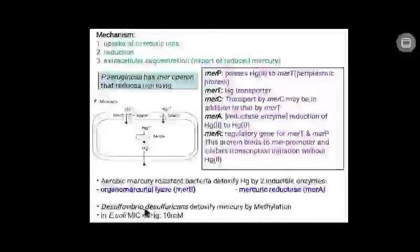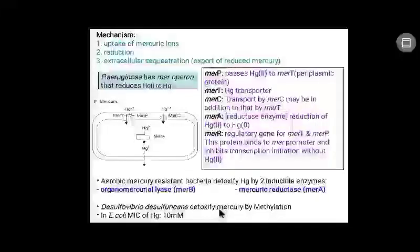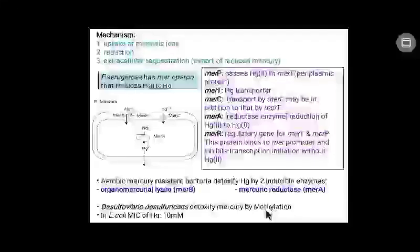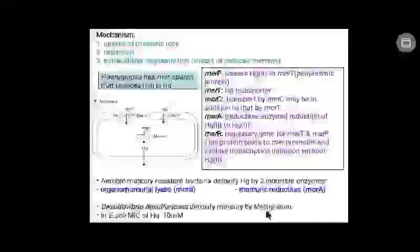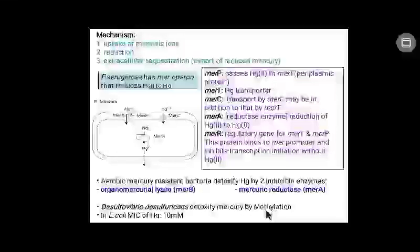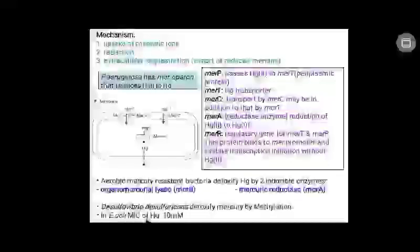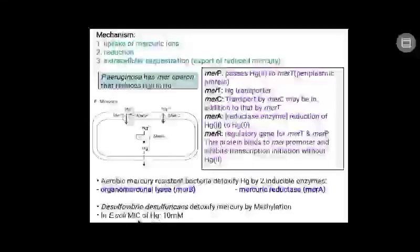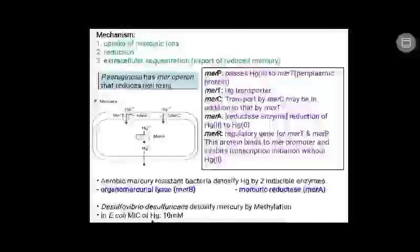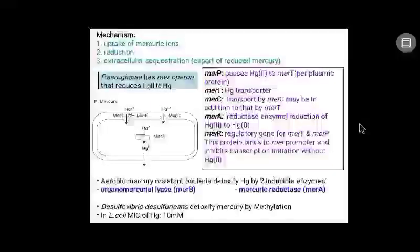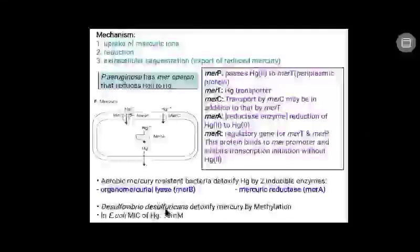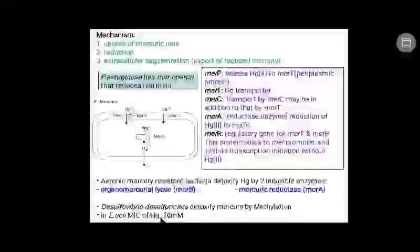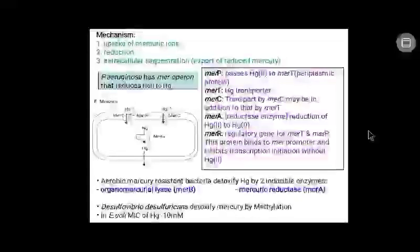Desulfovibrio desulfuricans can also detoxify mercury by the process of methylation, as the methylated form of mercury is less toxic than its ionic form. The minimal inhibitory concentration of mercury in E. coli is just 10 millimolar, meaning this amount can inhibit the growth and development of E. coli.